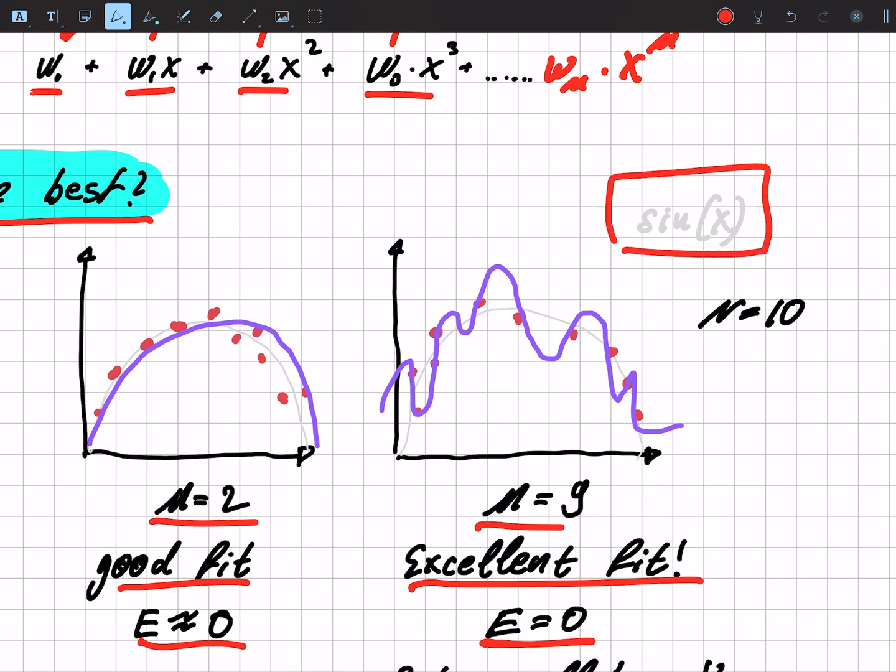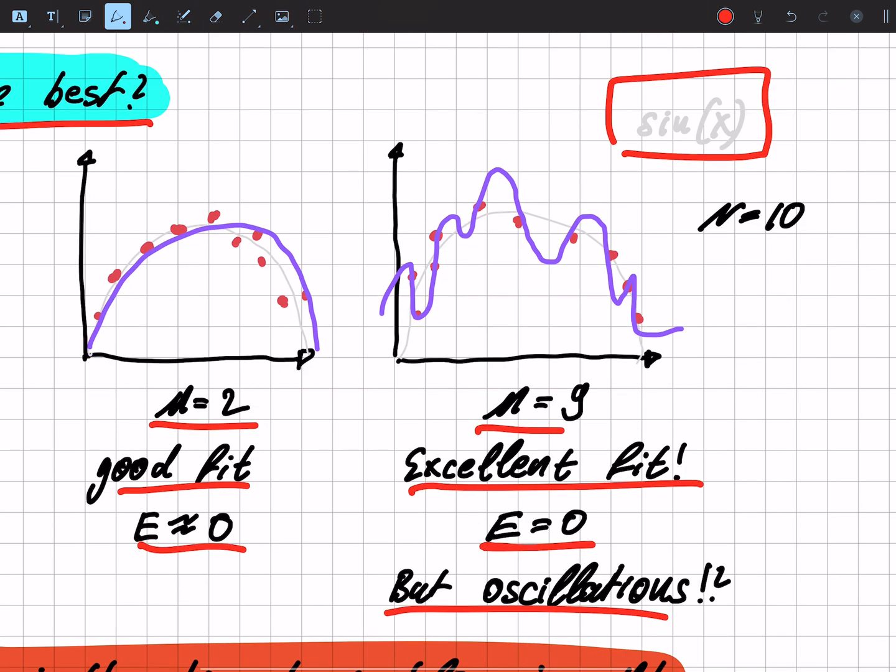Because we know that it's supposed to be a sine function, but this does not look like a sine function. We have those oscillations and they come from very large parameters of w.